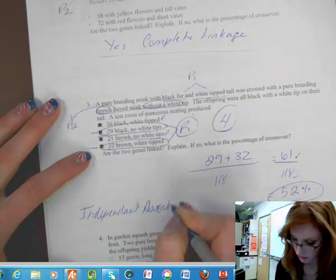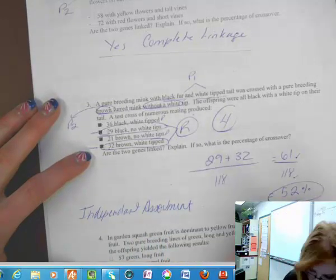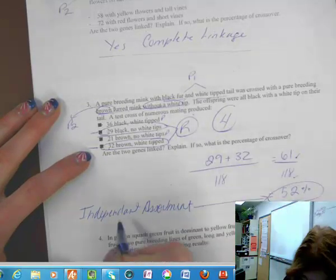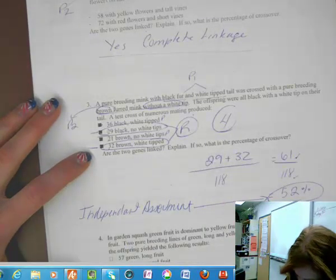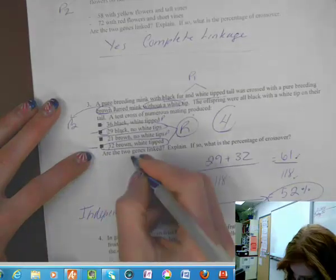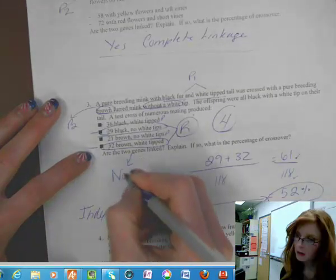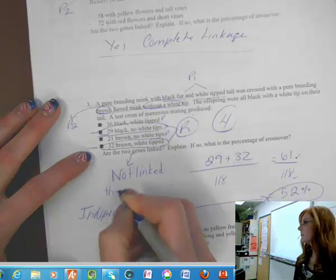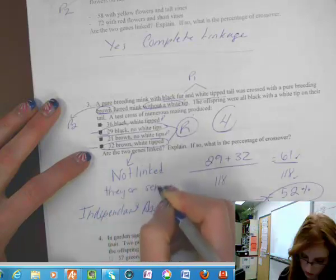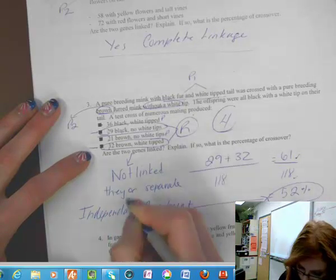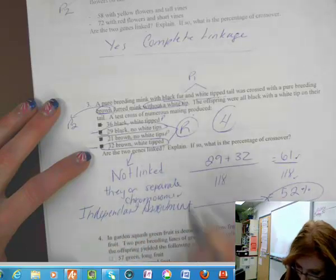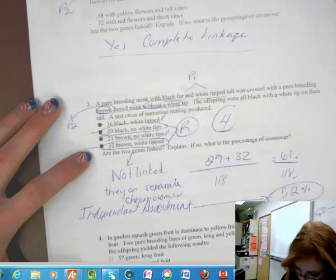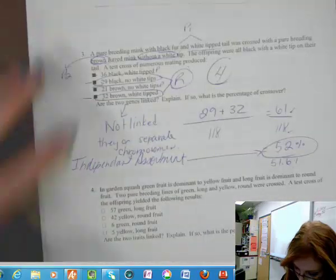So if this is independent assortment, because we know it's 52%, are the two genes linked? No. So not linked, this means they are on separate chromosomes.